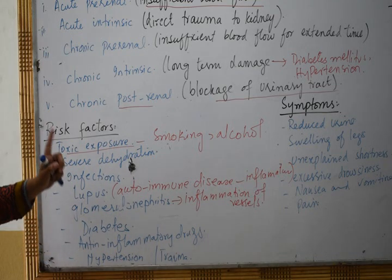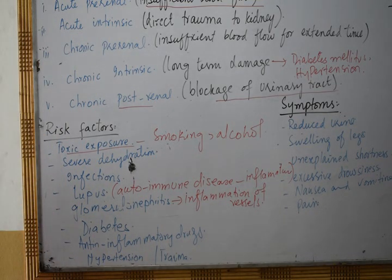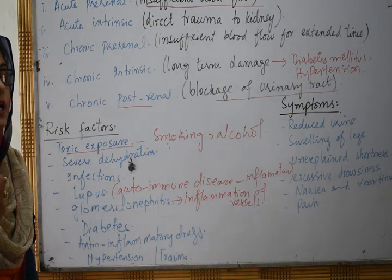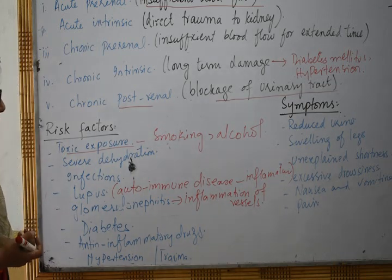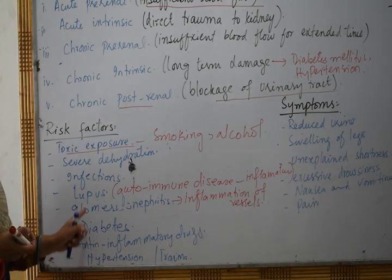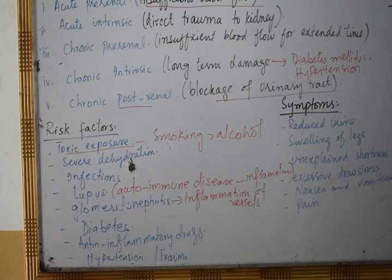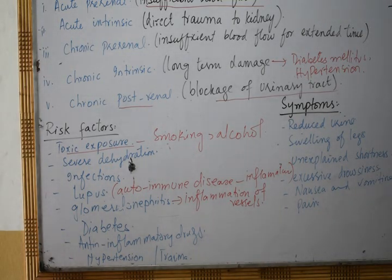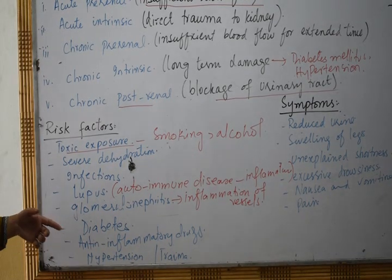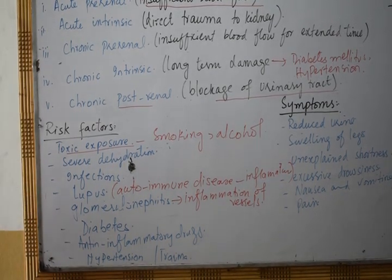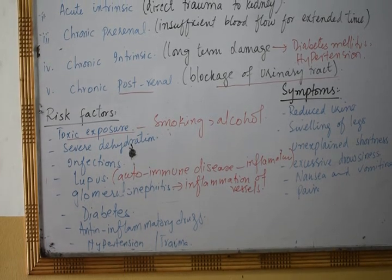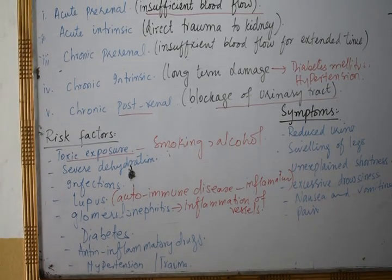Diabetes, especially diabetes mellitus, is a significant risk factor. Diabetes has two types: diabetes mellitus and diabetes insipidus. Insipidus is due to ADH deficiency and produces dilute urine — that is a different disease. Diabetes mellitus is due to insulin deficiency, which causes blood electrolyte concentration to increase. Because of those increased electrolytes, kidney damage increases, and typically diabetes leads to kidney failure.